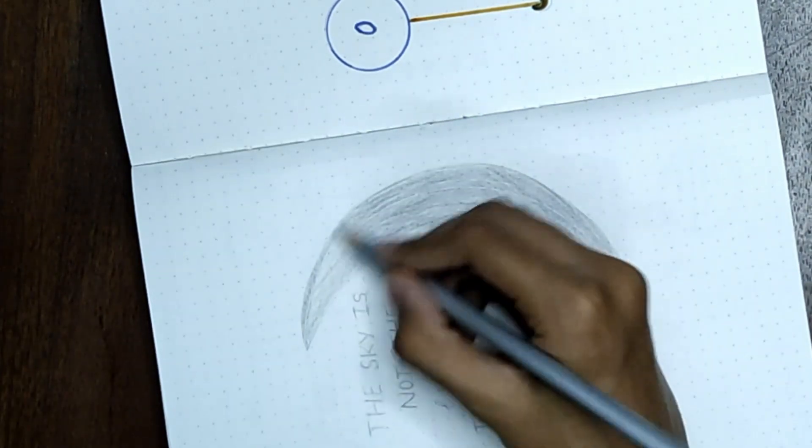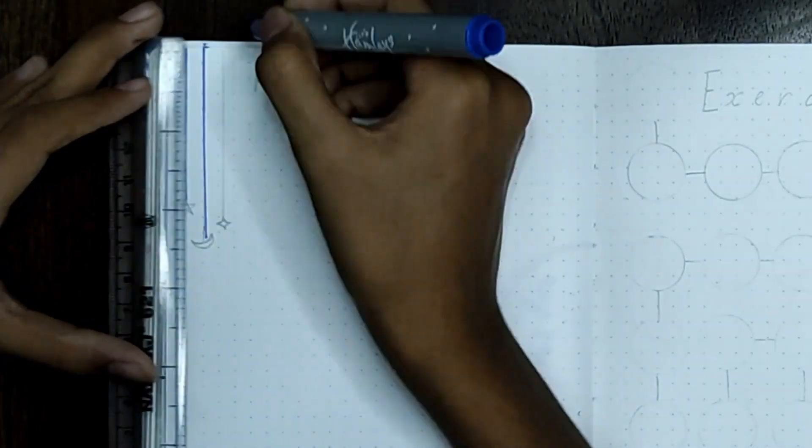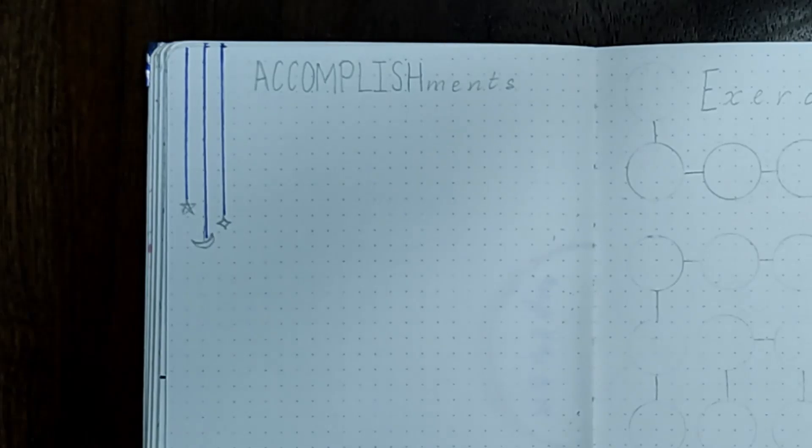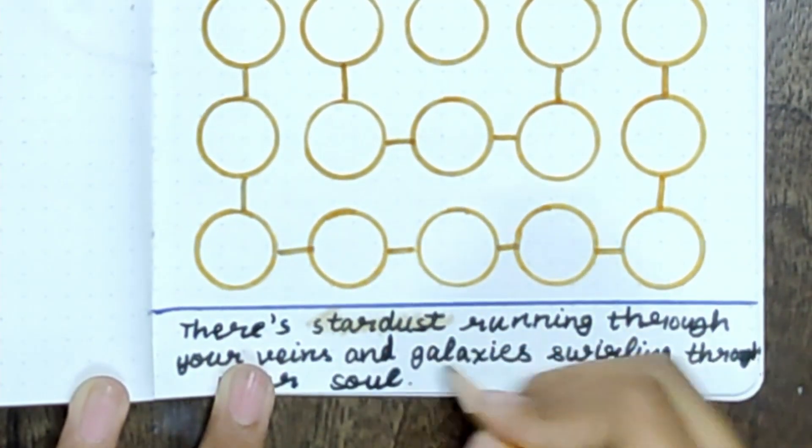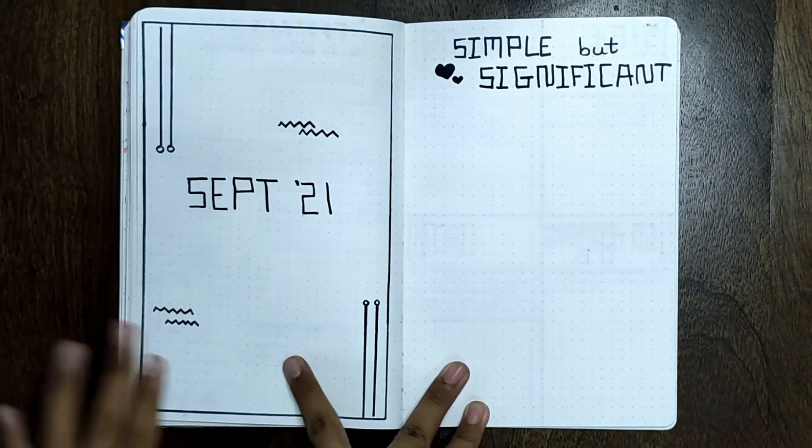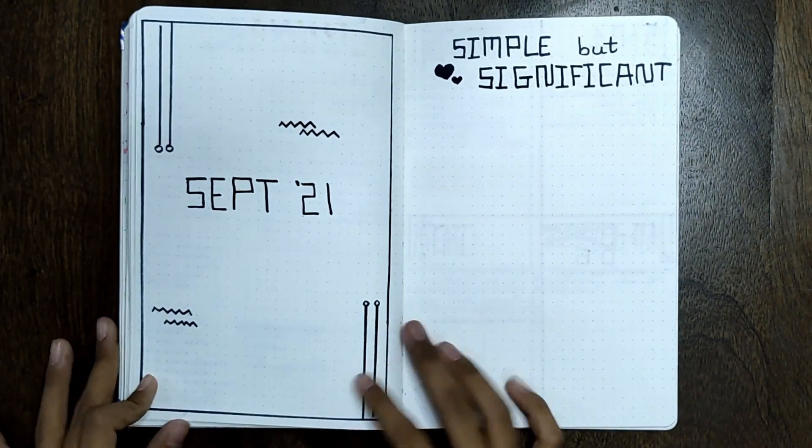Hello everyone, it's me Ira JN here on IJ World. Welcome back to another video. Today I'll be setting up my bullet journal for October 2021.